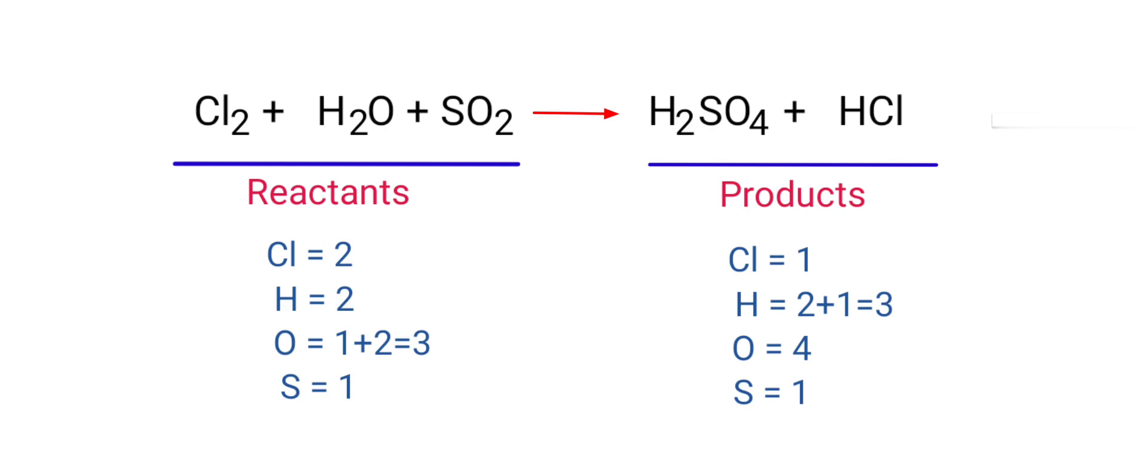In this equation, we need to balance the chlorine atoms first. To do this, we need to put a coefficient of 2 in front of HCl.